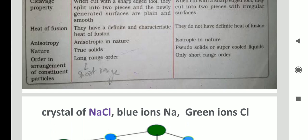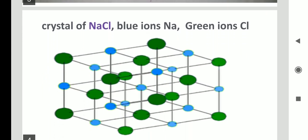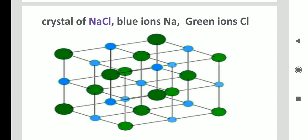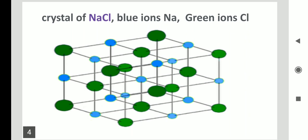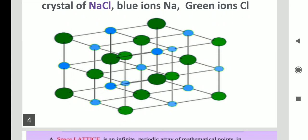Here is an example of crystal structure — sodium chloride. A crystal is a repeating pattern where atoms or molecules are arranged periodically. In sodium chloride, the blue ions are sodium and the green ions are chlorine. Sodium interacts with chlorine and chlorine interacts with sodium, and this repeating spot pattern is nothing but a crystal structure.